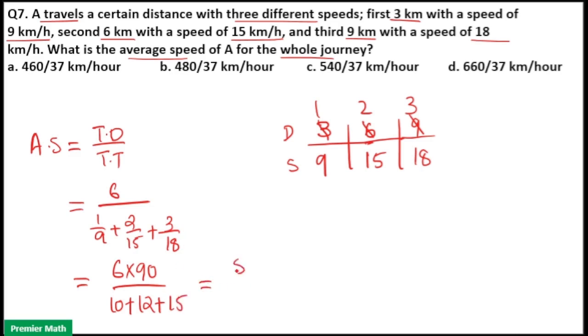Your answer is 6 into 90 is 540, divided by 10 plus 12 plus 15 is 37. So here option C is your answer.